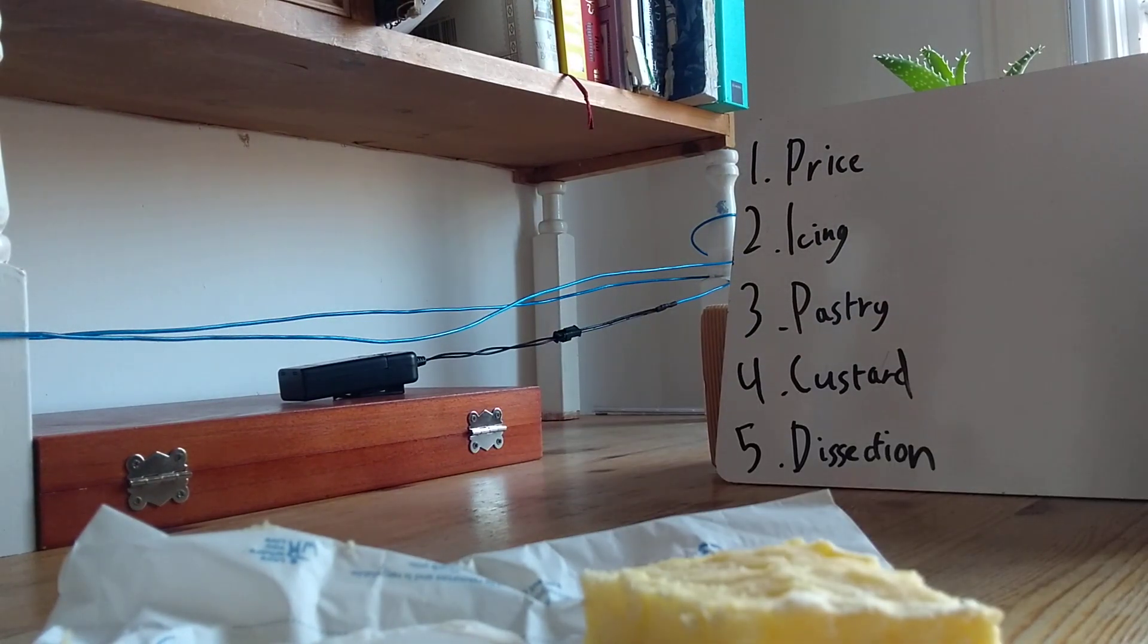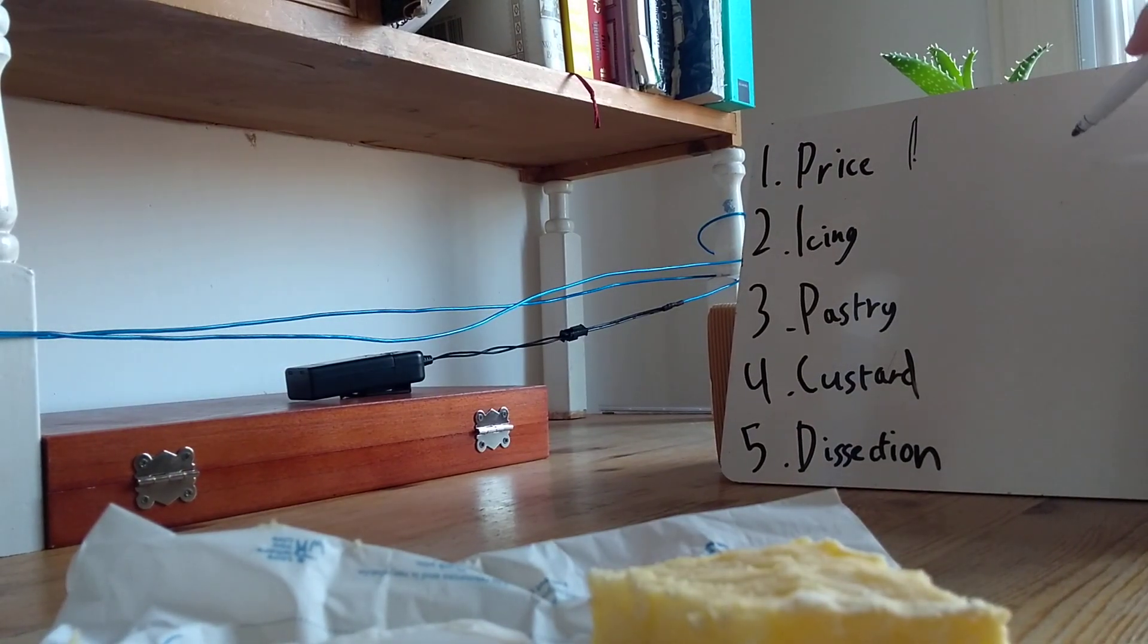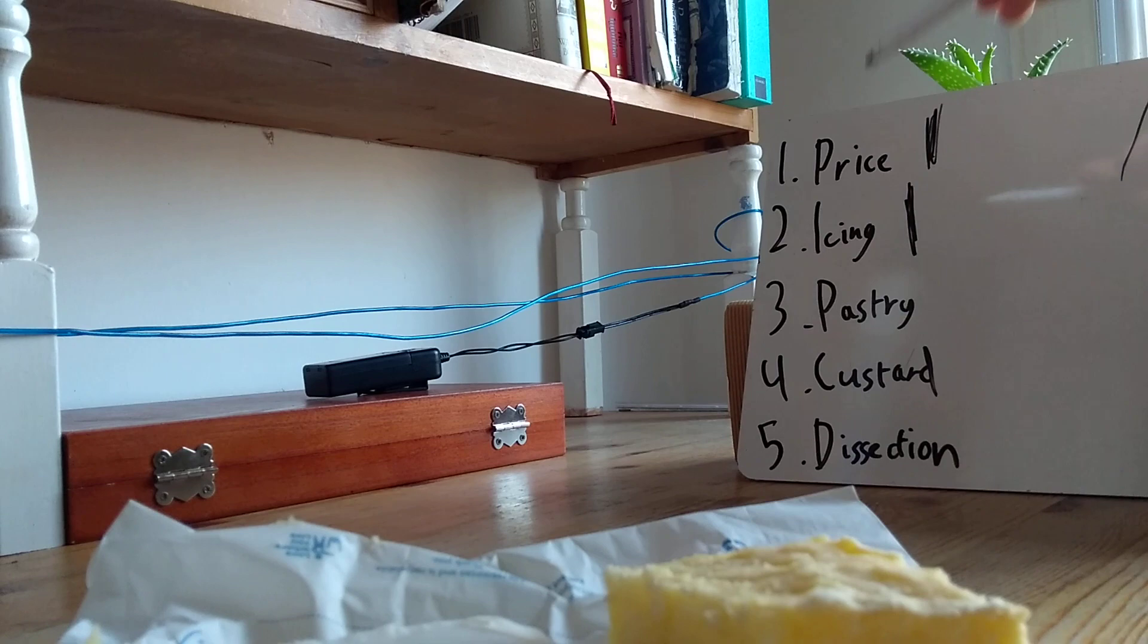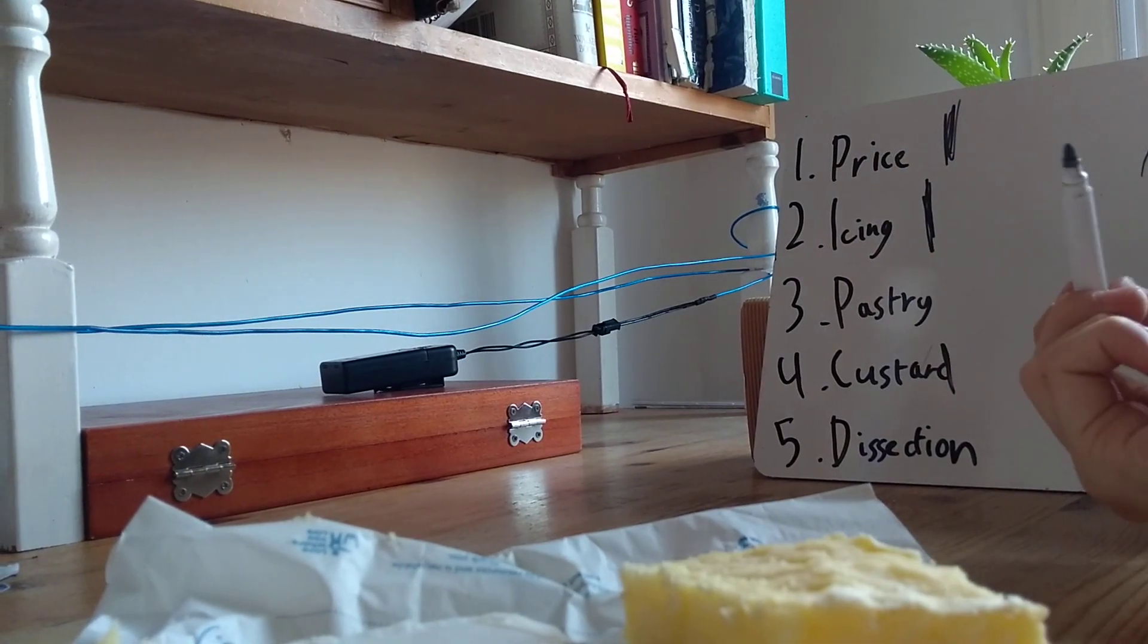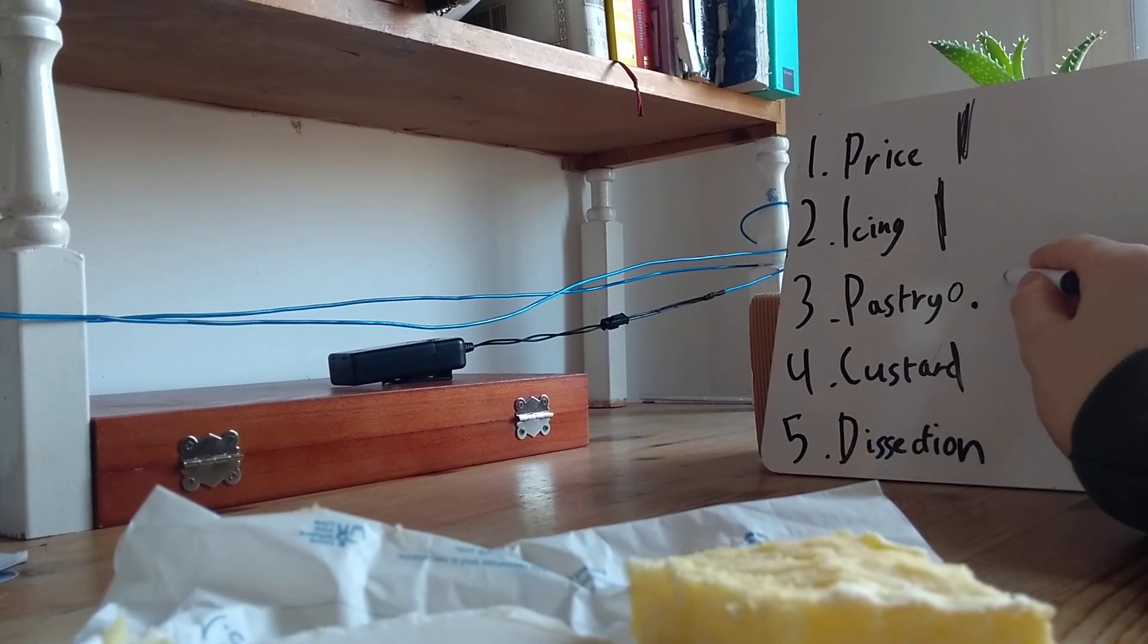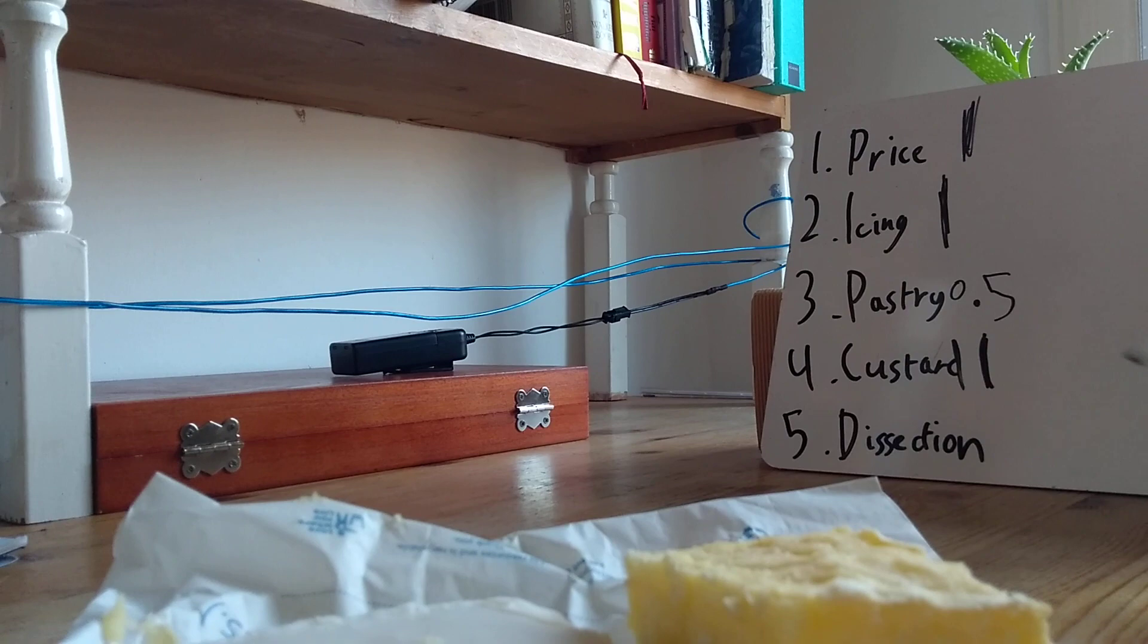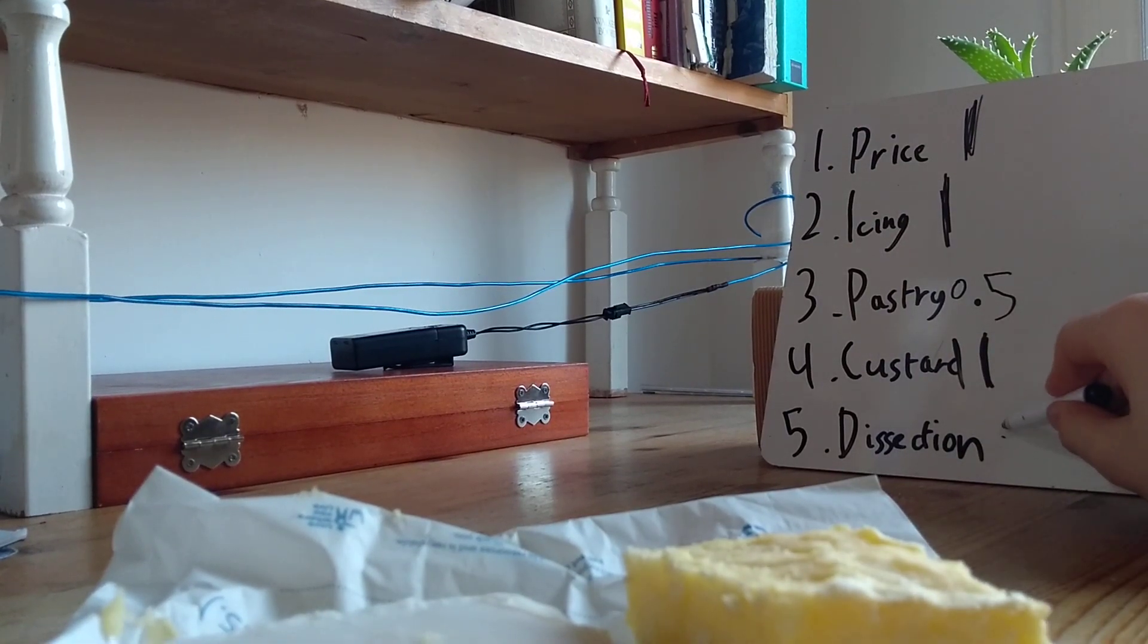Let's score. So, price is very good. So, that gets a mark. This is out of five. Uno. Icing. Nice and sweet. That was also very good. Pastry. I was a bit disappointed. So, I'm going to do a 0.5. Custard. Sweet as always. Very nice. One. Dissection was a bit tricky. I don't know if you guys can see that. But, yeah. That's a 0.5.